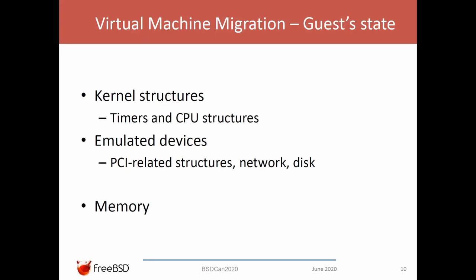The guest state is the most important part of a migration. It has three components: the kernel structures, which represent timers and the guest CPU state including registers, interrupts, etc.; the emulated devices, which are usually implemented in user space and are PCI-related structures such as virtio, network, and disk; and memory. While the first two components have a small state size, the memory can be large, so there must be special mechanisms to migrate the guest memory.